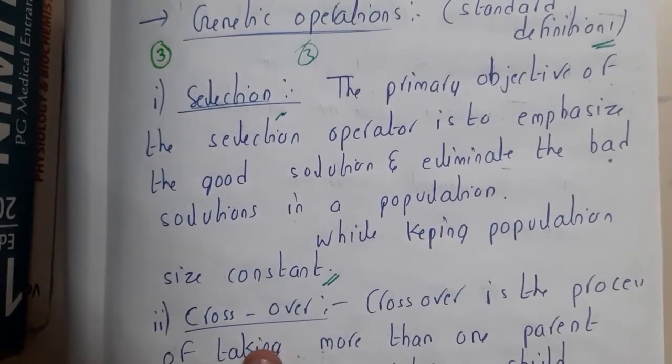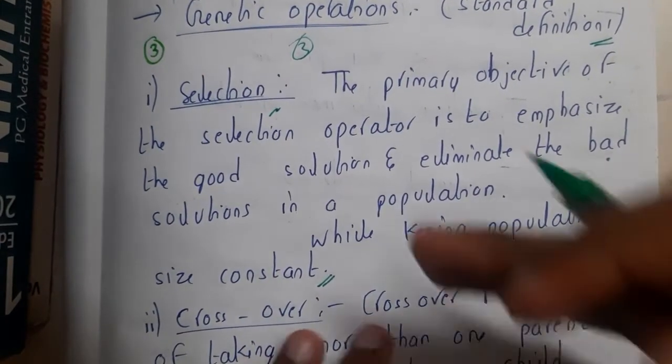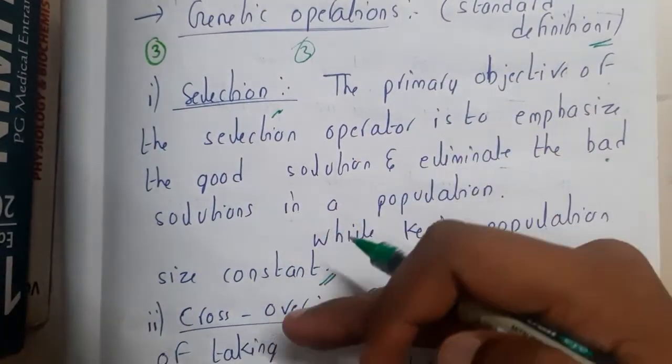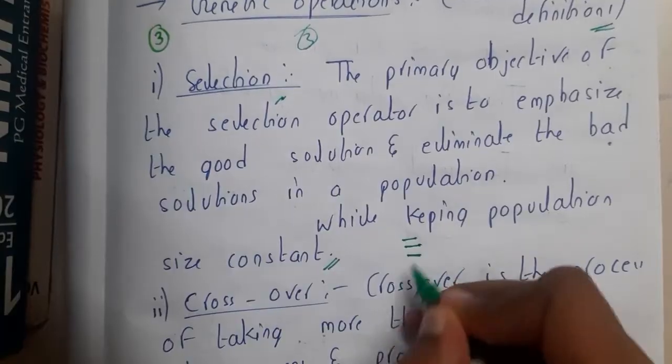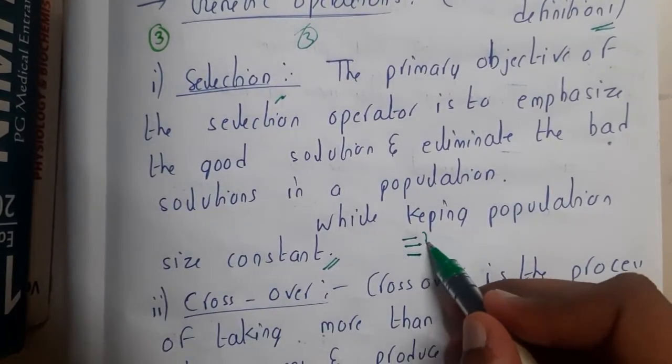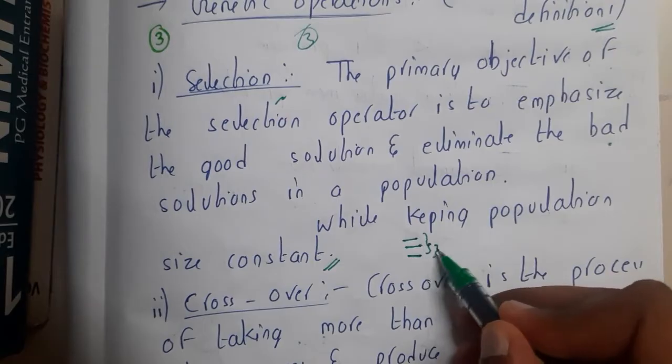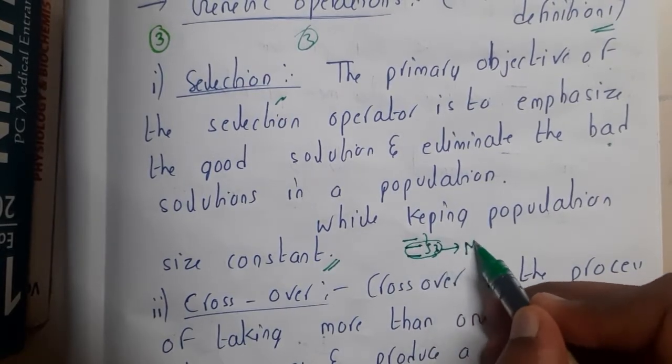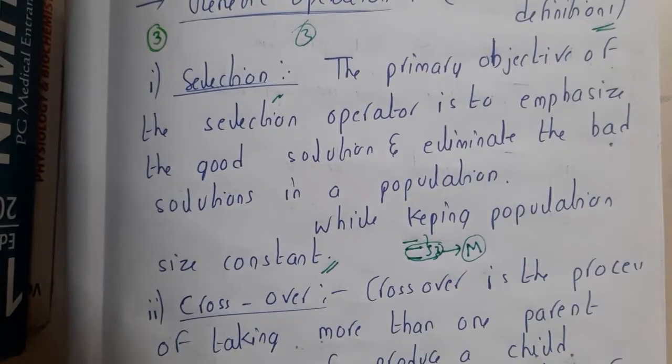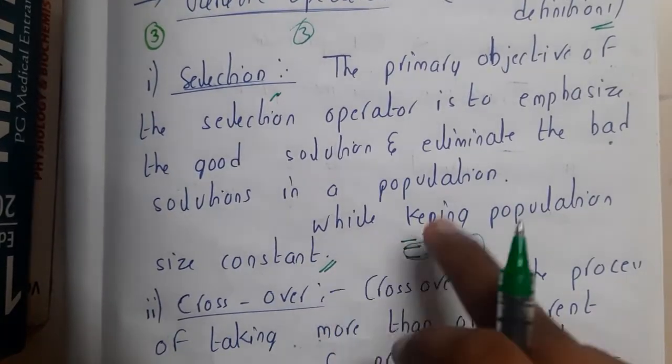Basically, you will be checking all the values - what value the first one is giving, what value the second one is giving. The best two you will select and pass them to perform the next operation. Your goal is to keep the population the same. That concept is selection.